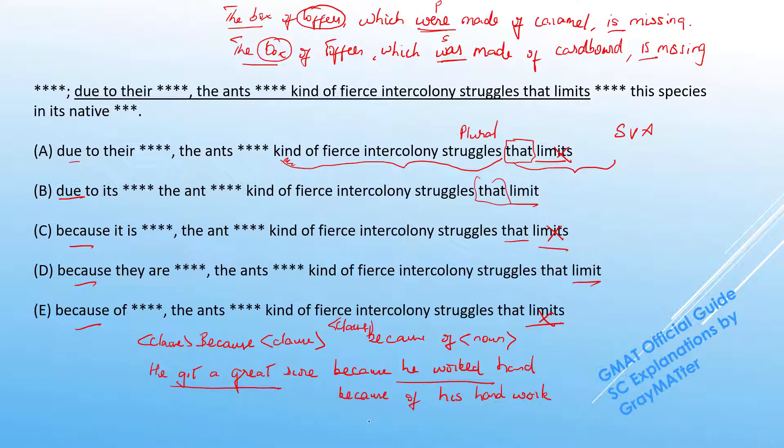So it might sound okay to say he got a great score due to his hard work. But you can sort that confusion out by reading 'due to' as 'caused by.' So would it make sense to say he got a great score caused by his hard work? Obviously not. So the right way of putting that would be his great score was...